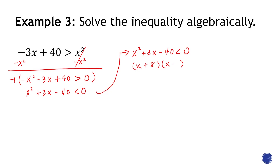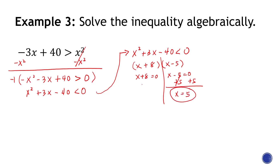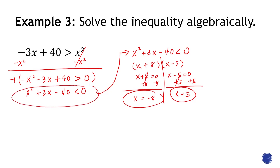The two numbers are positive 8 and negative 5: 8 times negative 5 is negative 40, and 8 plus negative 5 is positive 3. Setting each factor equal to zero gives x equals positive 5 and x equals negative 8. Since the inequality is now less than, the interval notation is from negative 8 to 5 — like coordinates in the Cartesian plane, make sure the number on the left is less than the number on the right.